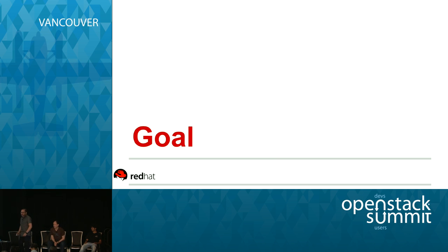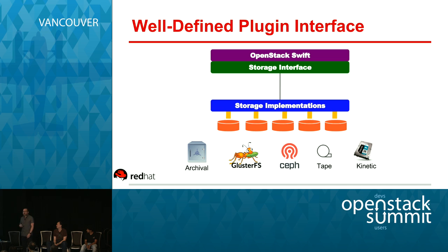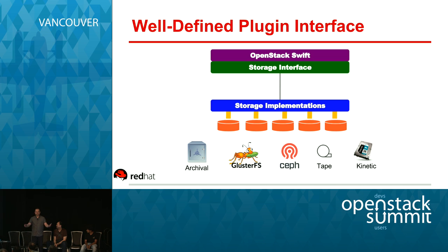You've seen the technology and what we're trying to do. The ultimate goal of these projects is a well-defined storage interface for Swift. That will allow storage file systems and third-party systems to benefit from all the middleware available for the proxy, and send that data to your third-party storage systems. That is the goal — and it's just the start of a conversation.